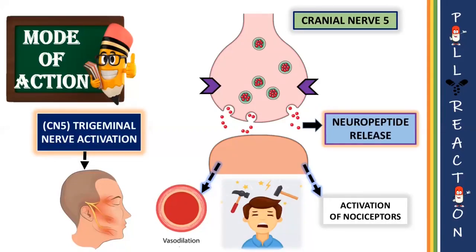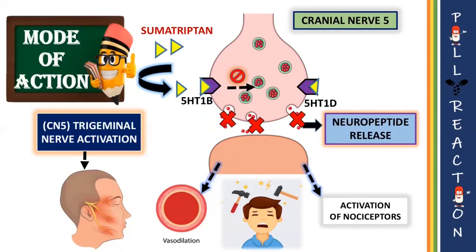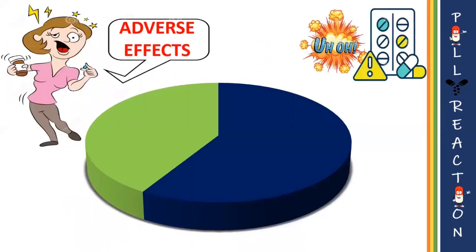Pharmacological treatment of acute migraine headache using sumatriptan works by stimulating 5-HT 1B and 5-HT 1D presynaptic autoreceptors, which provides a negative feedback mechanism to the vesicles where neuropeptides are stored. Therefore, the release of neuropeptides is inhibited. This action decreases inflammation, vasodilation, and pain.